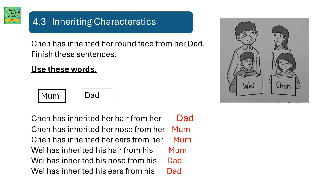4.3 Inheriting Characteristics. Shen has inherited her round face from her dad. Finish these sentences using the words mum and dad. Shen has inherited her hair from her dad. Shen has inherited her nose from her mum. Shen has inherited her ears from her mum. Wei has inherited his hair from his mum. Wei has inherited his nose from his dad. And Wei has inherited his ears from his dad.